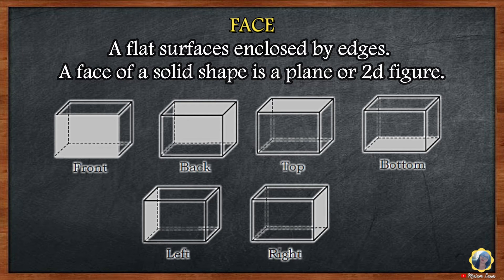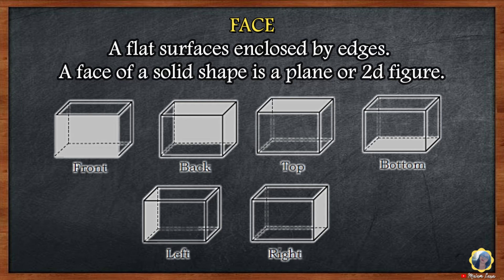Let's study the illustration. Our solid figure here is a rectangular prism. It has six faces: front, back, top, bottom, left, and right.